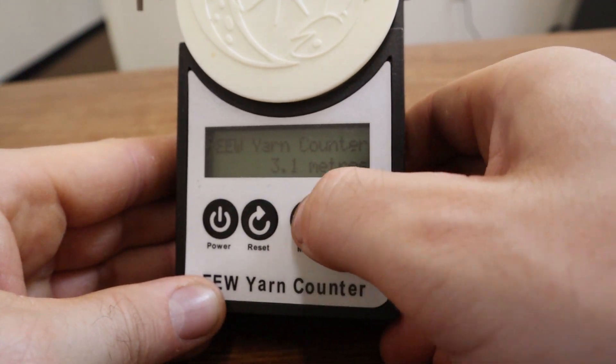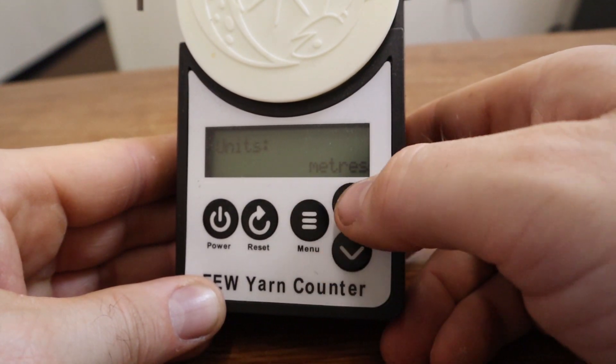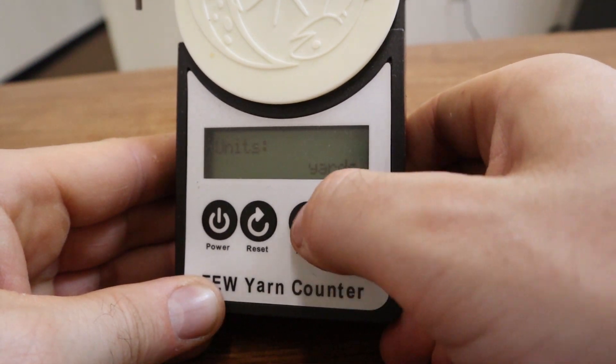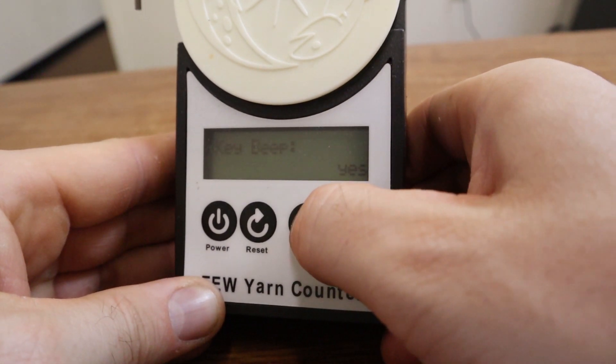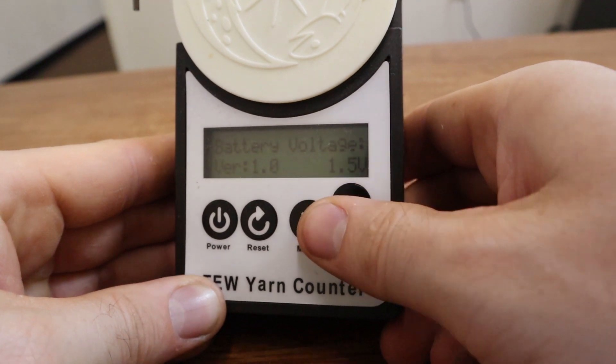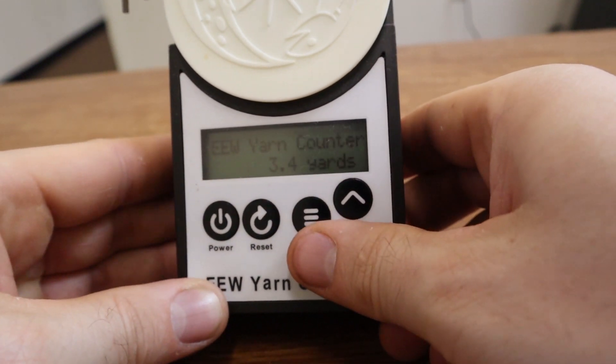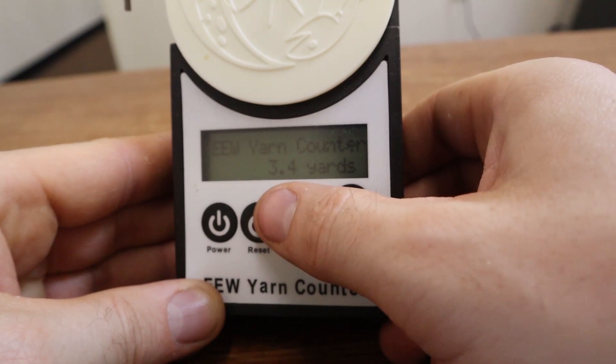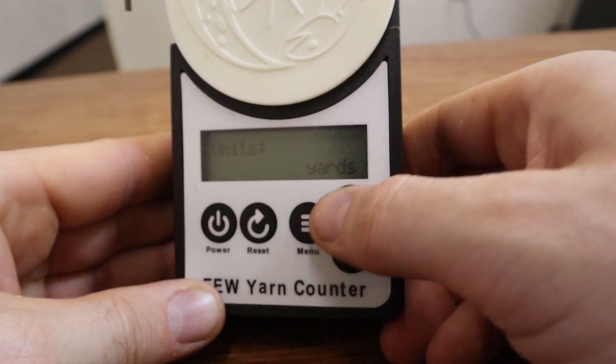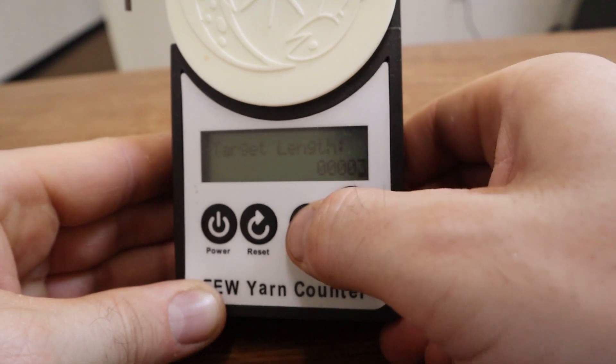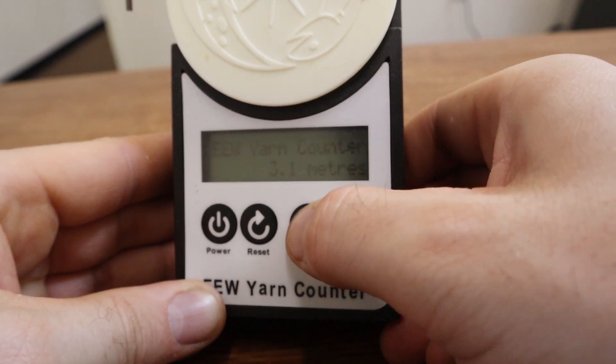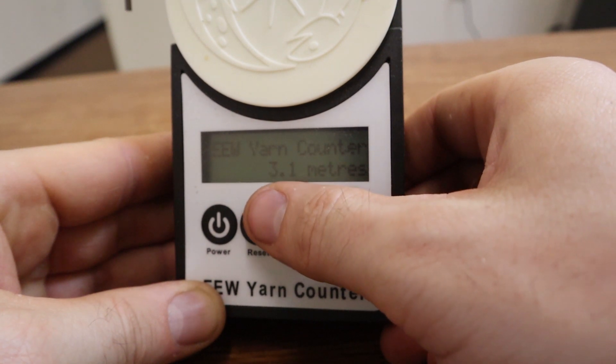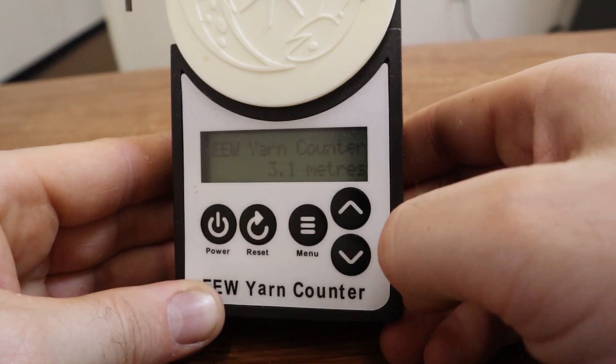I guess one other thing I'll show you that's kind of nice is if you have it set to meters, and you actually want it to set to yards, you can switch it to yards even after you started counting. And if you go back, it's actually going to switch this number. So this is at 3.4. I actually forget what it was when it was at meters, but it should be a little bit less. So yeah, so it went from 3.1 meters is 3.4 yards.